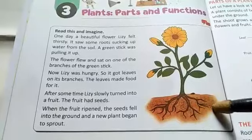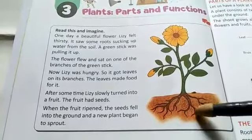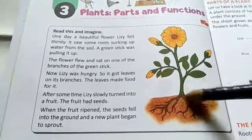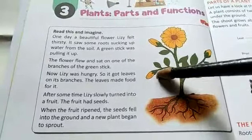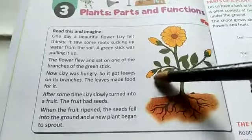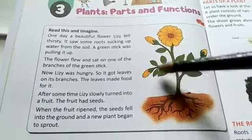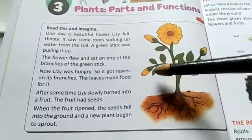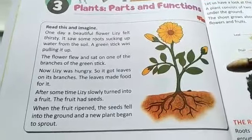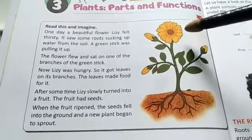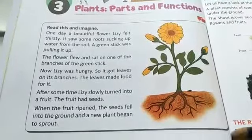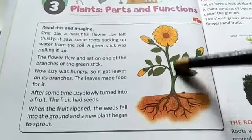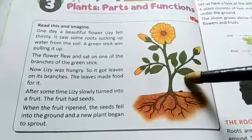The green stick was taking water in the upward direction. The flower flew and sat on one of the branches. As water was being taken from the soil, slowly one flower sat on the green stick.